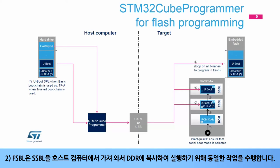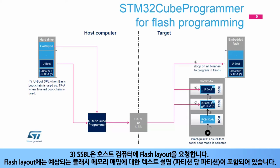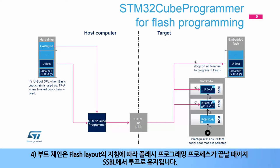Step 1: The ROM code starts and detects the selected boot mode is serial, whether UART or USB. It downloads the FSBL via the available serial link from the host computer to the embedded RAM and runs it. Step 2: The FSBL does the same to get the SSBL from the host computer and copies it to the DDR for execution. Step 3: The SSBL asks for the flash layout from the host computer. The flash layout contains a textual description of the expected flash memory mapping, partition per partition.